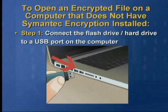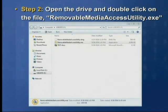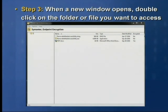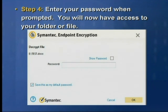To open an encrypted file on a computer that does not have semantic encryption installed: step one, connect the flash drive or hard drive to a USB port on the computer. Step two, open the drive and double-click on the file removablemediaaccessutility.exe. Step three, when a new window opens, double-click on the folder or file you want to access. Step four, enter your password when prompted. You will now have access to that file or folder.